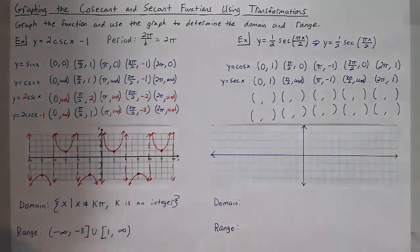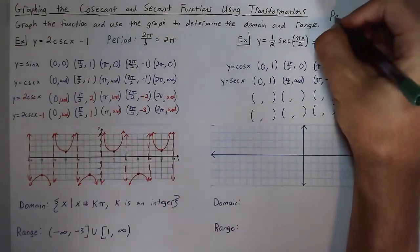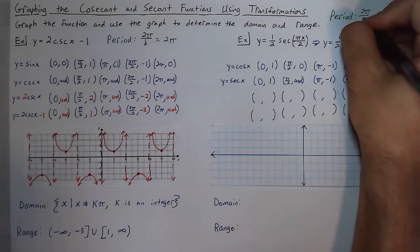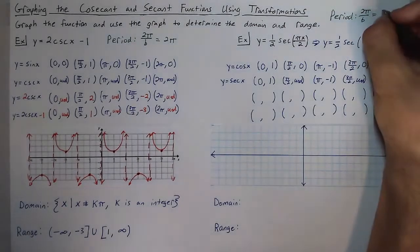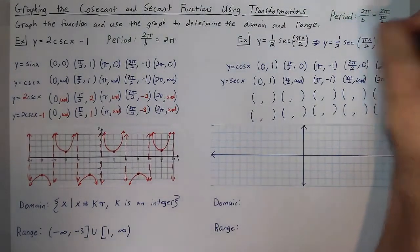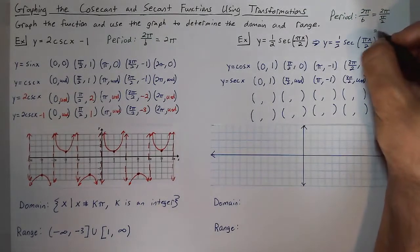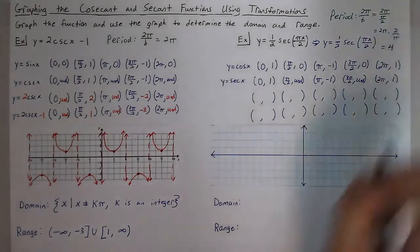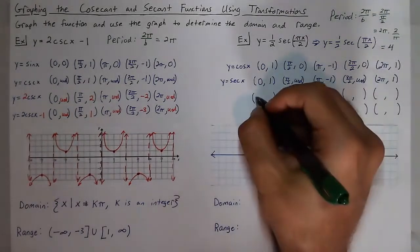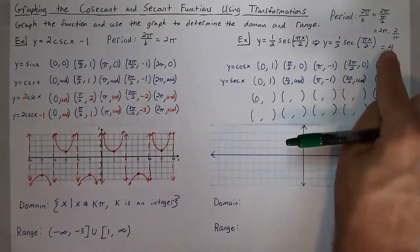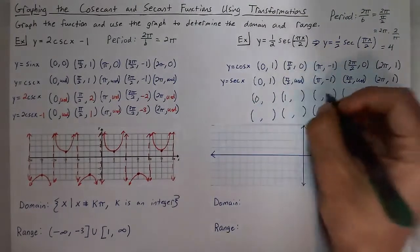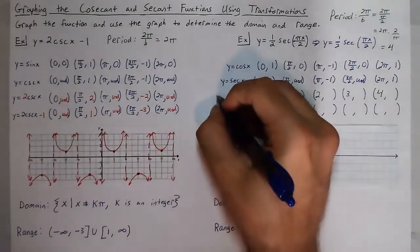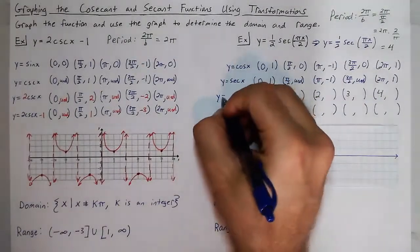The period is 2π over b, and b is π/2. So we have 2π divided by π/2, which equals 2π times 2/π, giving a period of 4. So we go from 0 to 4, and dividing by 4 we see it changes by 1 at each key x value. That is what happens to our period when we change b.